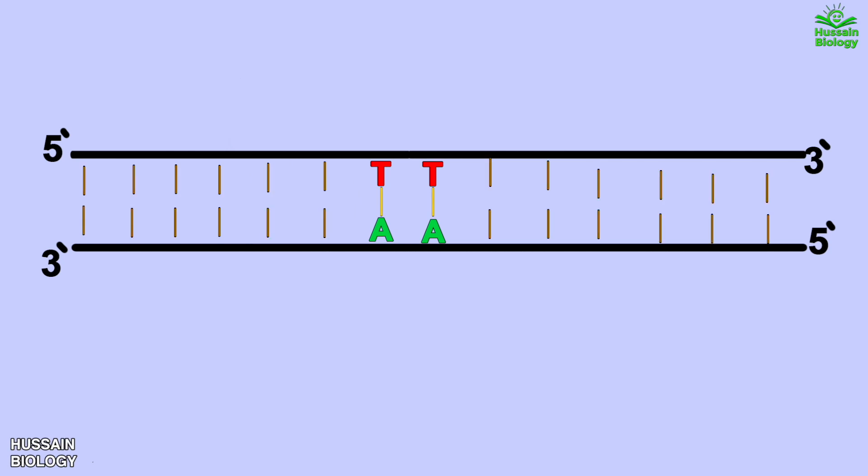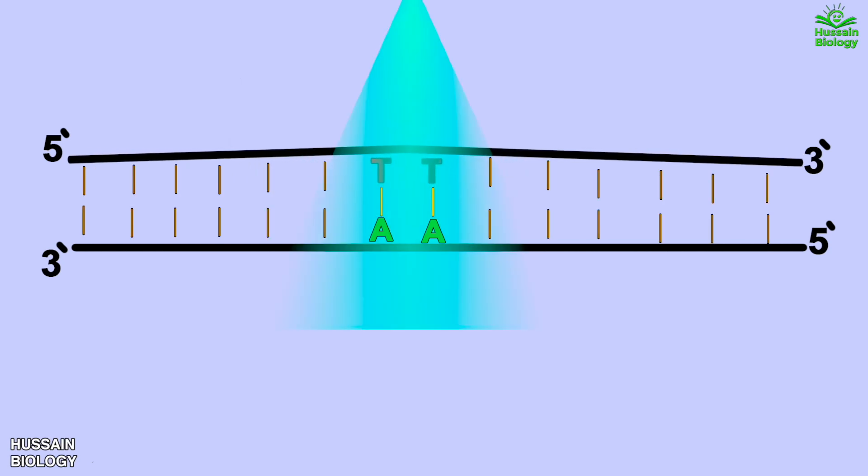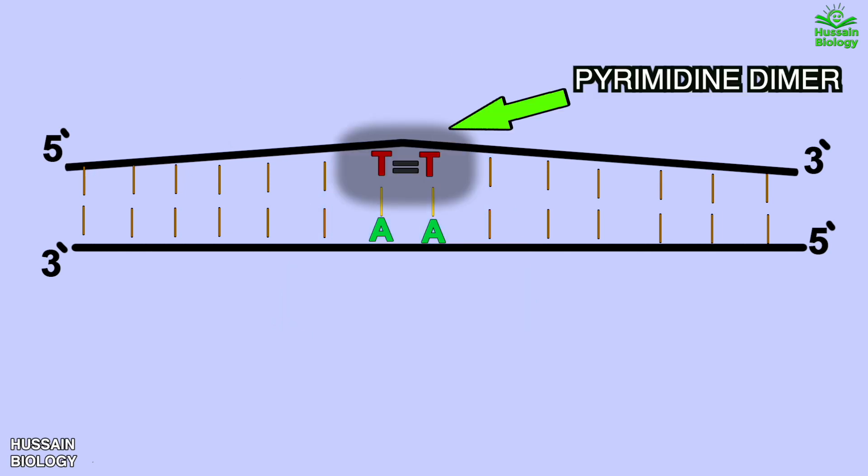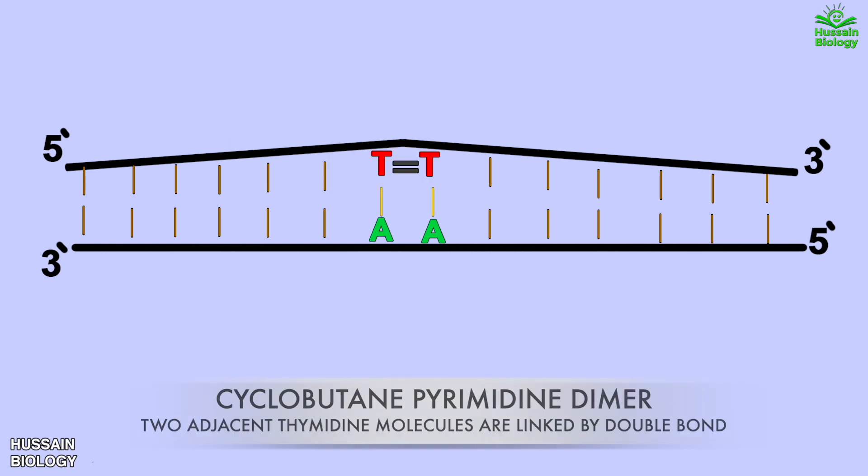Now let's get to the mechanism of nucleotide excision repair. Here in this diagram we have the DNA molecule. When it is exposed to UV light we get the formation of thymidine dimers as shown in the diagram, which is termed as pyrimidine dimer. The defect or point lesion is formed of thymine thymine cyclobutene pyrimidine dimer.